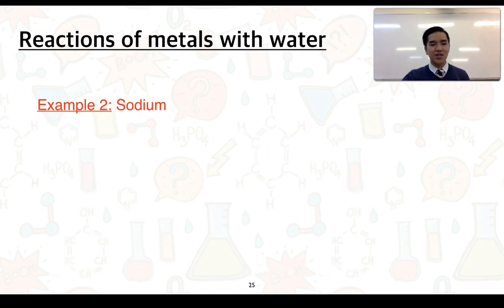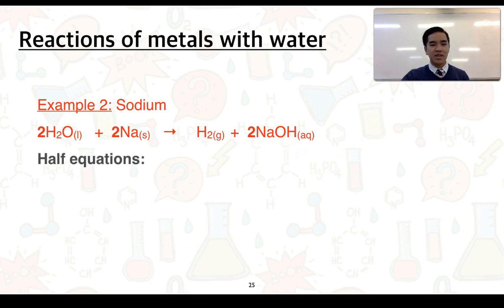Second example, looking at sodium. So again, sodium being a metal reacts with water, known to produce hydrogen gas and a metal hydroxide, which is sodium hydroxide here. Looking at the half equations, we already know what happens to the water, so it gets reduced, forms hydrogen gas and hydroxide ions.